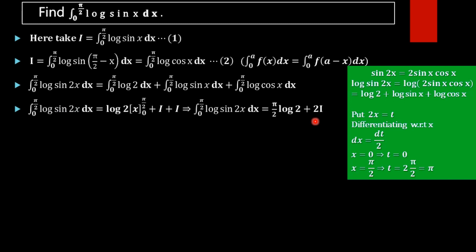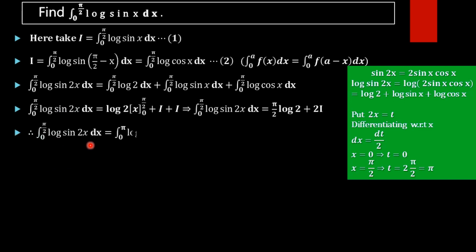To find I, we need to evaluate the integral from 0 to π/2 of log(sin 2x) dx. For this substitution, let 2x = t. Differentiating, we get 2 dx = dt, so dx = dt/2. The integral becomes the integral of log(sin t) · (dt/2).